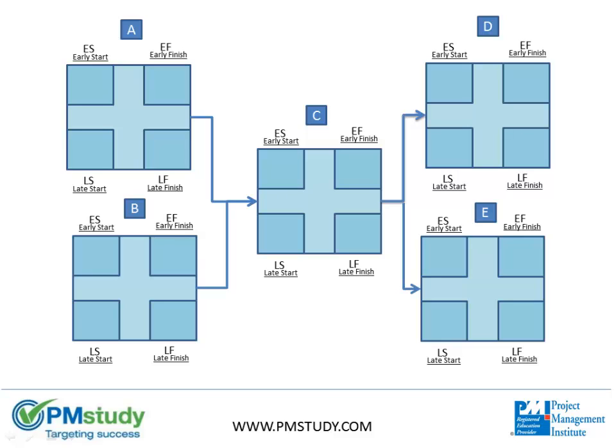Lastly, we need to show the duration of each task. Let us assume that A has a duration of two days, B has four days, C has six days, D has eight, and E has ten. Let's run through the Critical Path Method to determine the float for each task, the critical path, as well as some other key information about our project schedule activities.